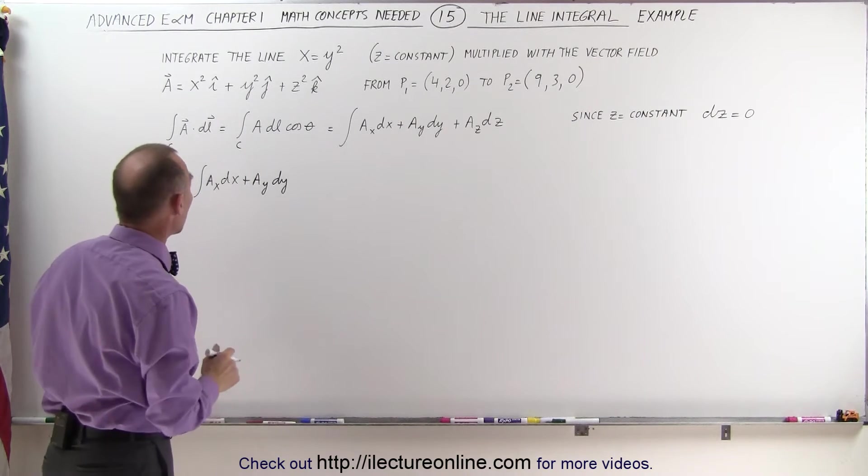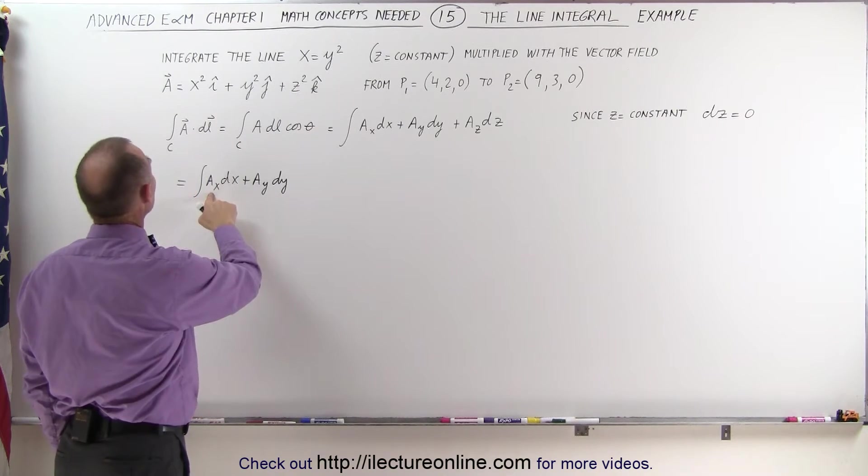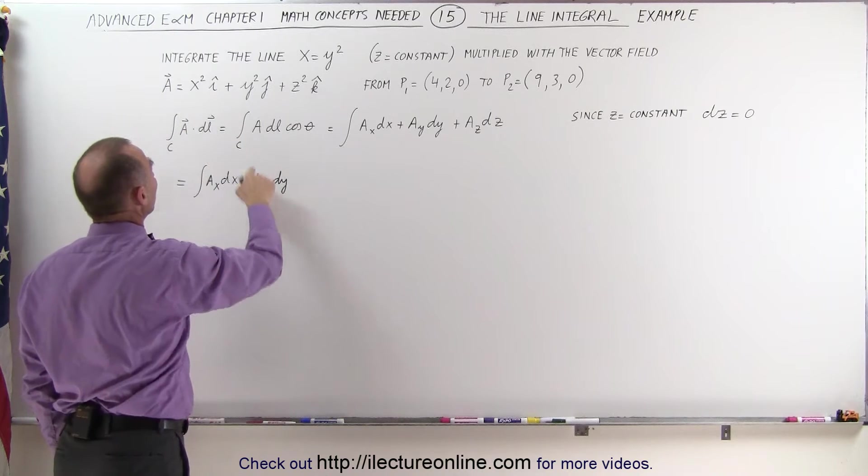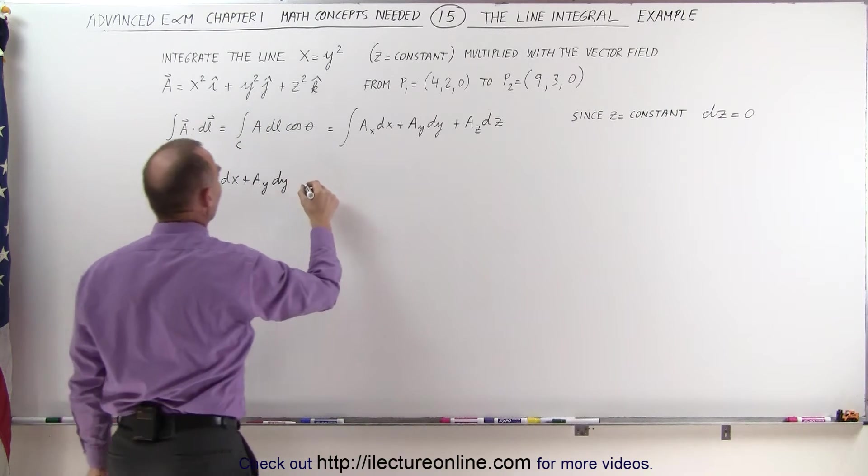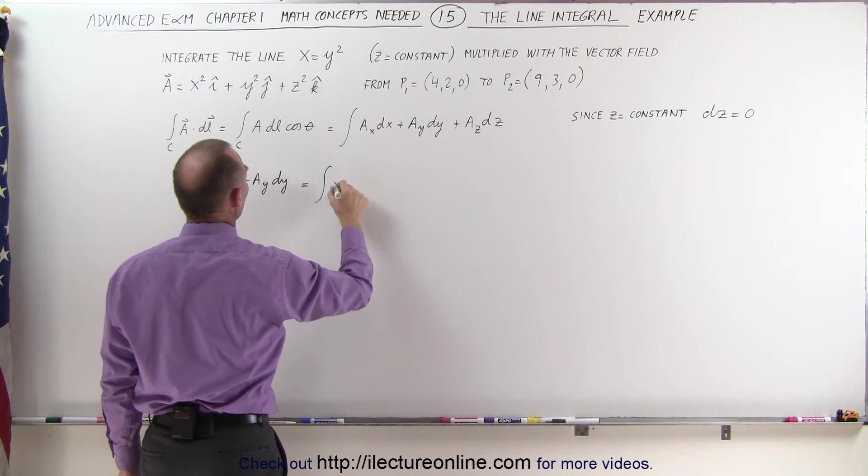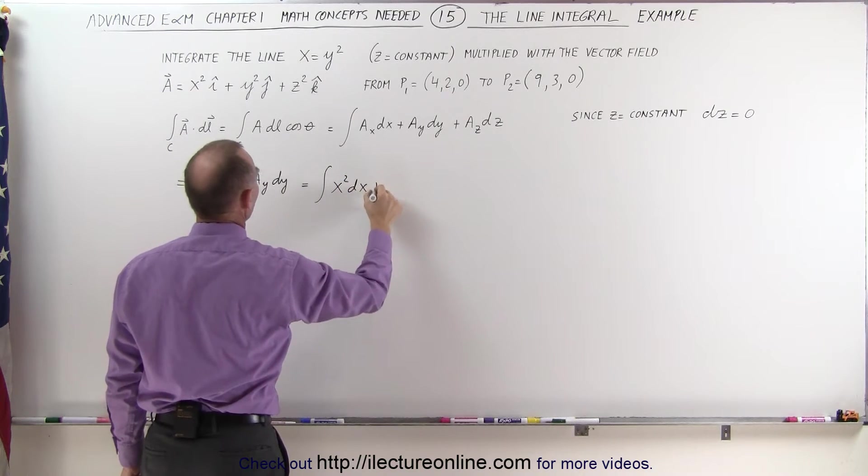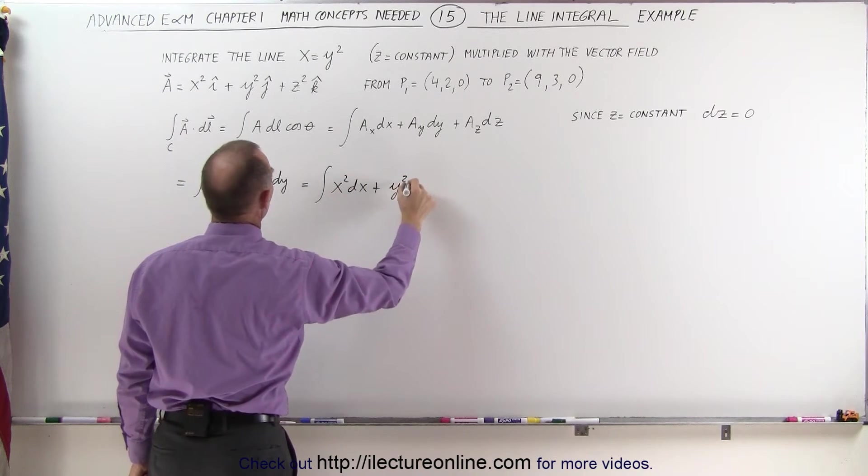Now let's go ahead and plug in what we know. The x component is x squared, the y component is y squared. So this can now be written as the integral of x squared dx plus y squared dy.